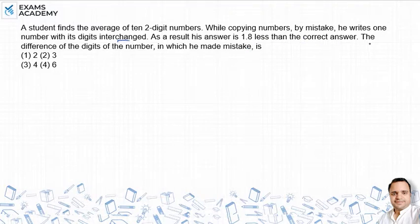The difference of digits of the number in which he made the mistake is what? Question में एक student ने 10 two-digit के numbers का average निकाला लेकिन गलती से उसने एक two-digit के number को interchange, उसकी digits को interchange करके लिख दिए जिसकी वजह से average जो आया वो 1.8 less आया.